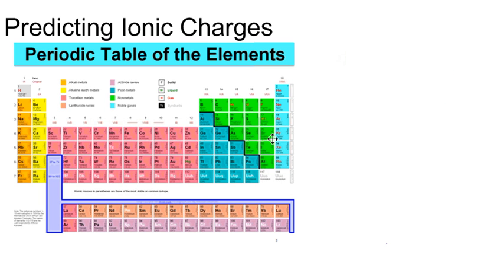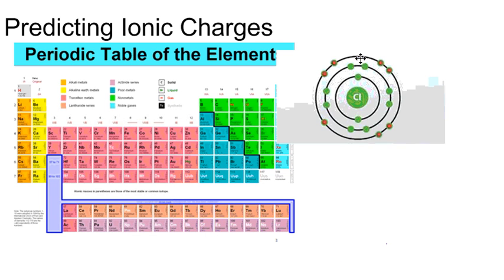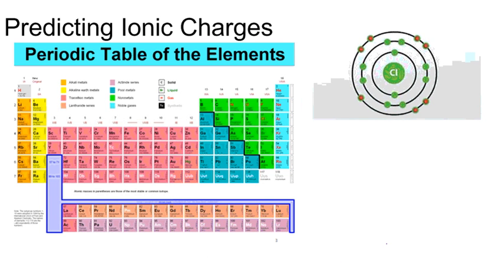Let's look at another example, chlorine in group seven. Chlorine has an atomic number of 17. That means it has 17 positive protons and 17 negative electrons.